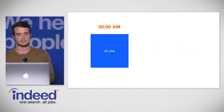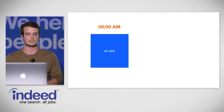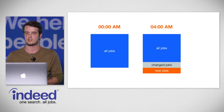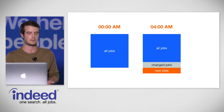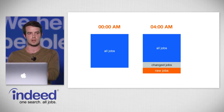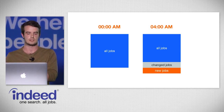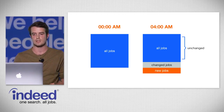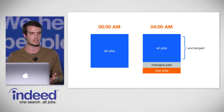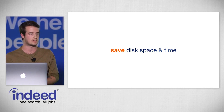Imagine that at the beginning of the day we have a few million jobs in our job index. Later, our aggregation engine notices some changed and new jobs — those should be the only modifications needed. The vast majority of the job index is unchanged, so we thought it would be really nice to have a way to make incremental updates to artifacts. This would save disk space and time, and work for any data we'd be shipping around.